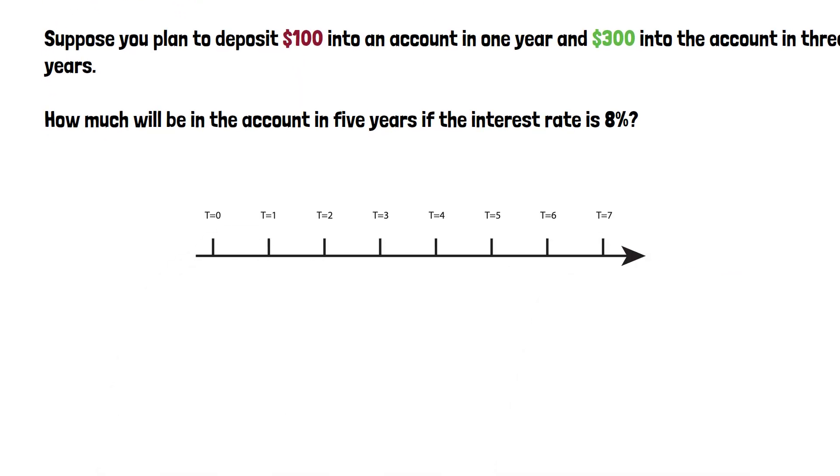Let's draw this timeline so we can show the cash flows. At the end of the first year, $100. At the end of the third year, $300.